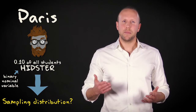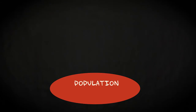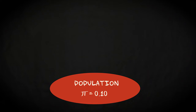You know that 10% of the students in Paris identifies as a hipster. This means that the population proportion, which is symbolized by pi, equals 0.10. Now, imagine that we draw a sample of n equals 200 from this population. The sample proportion, which is symbolized by p, will be a number close to 0.10 — it could be, for instance, 0.09 or 0.12.